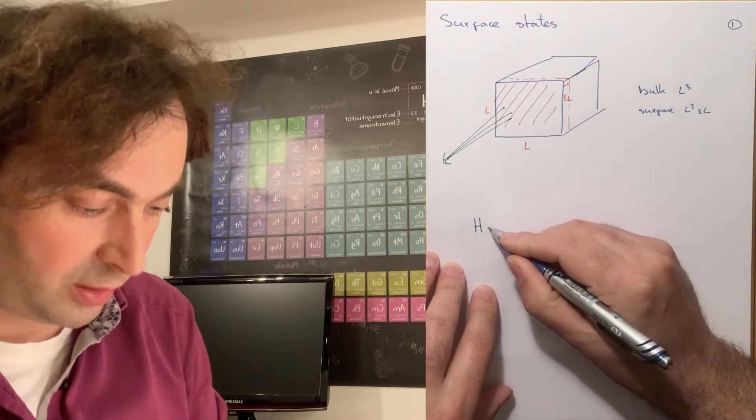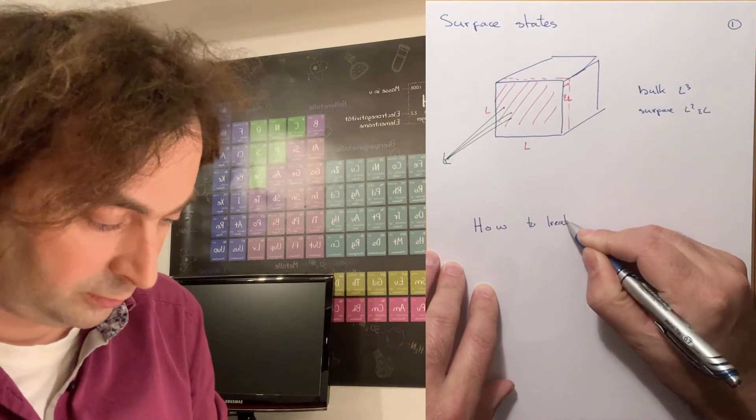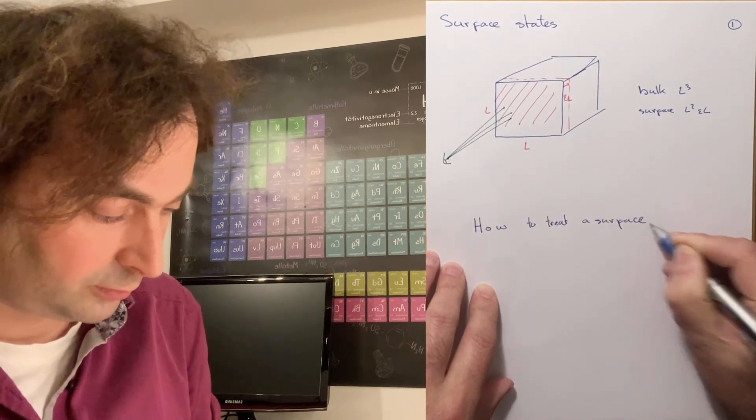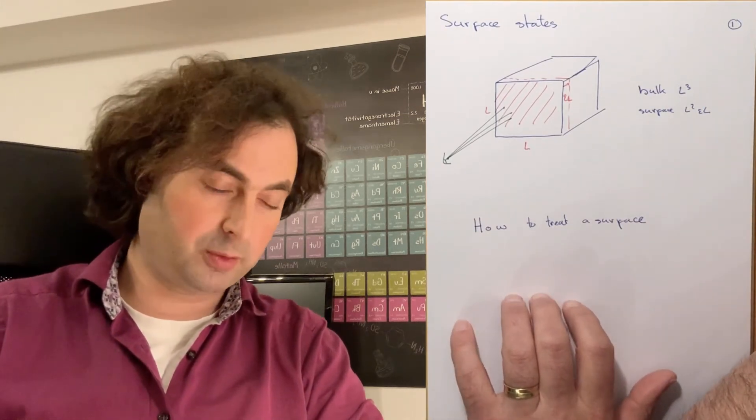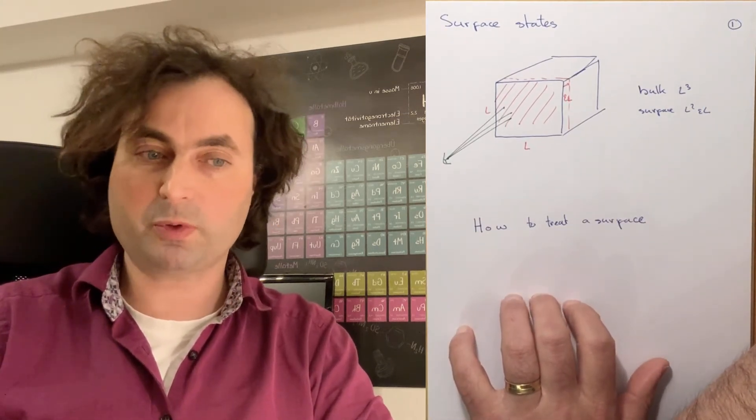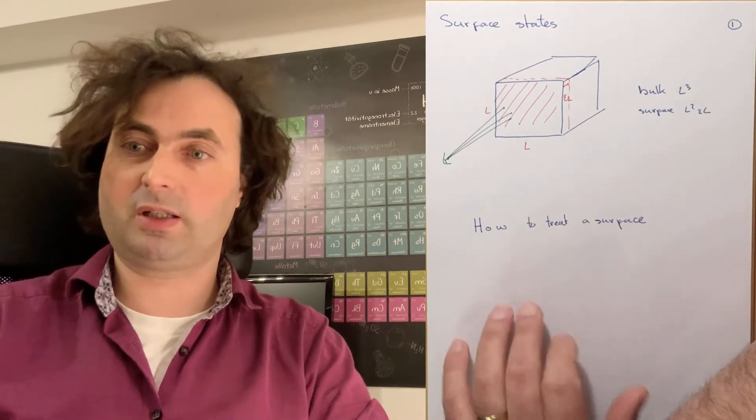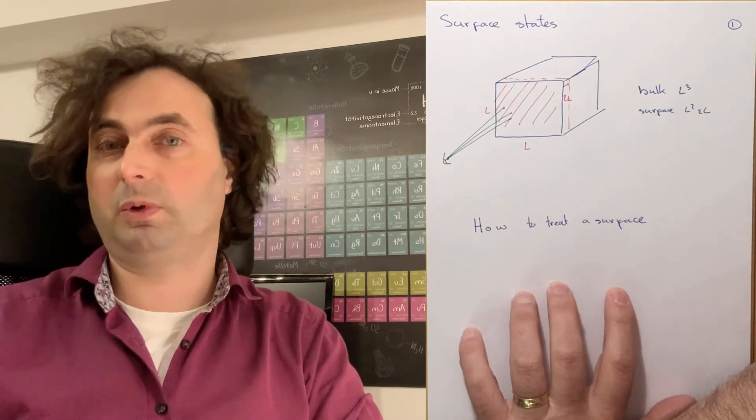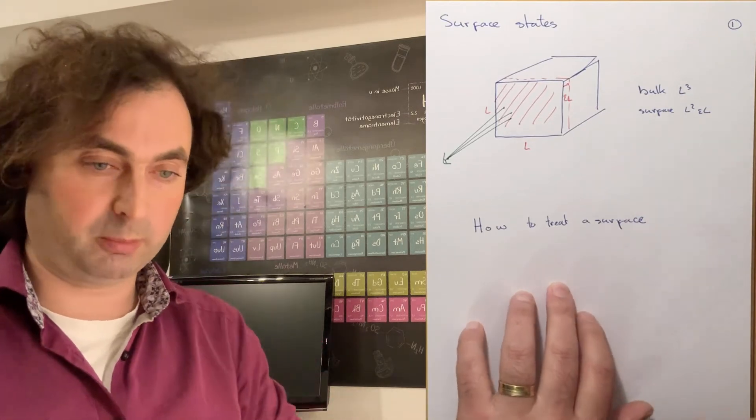This raises the question how to treat a surface. For a bulk crystal, we can use a Fourier transform to go from real space to momentum space or crystal momentum space. In crystal momentum space, the Hamiltonian becomes block diagonal. States with different crystal momentum don't interact with each other, and that helps us to solve the Hamiltonian.